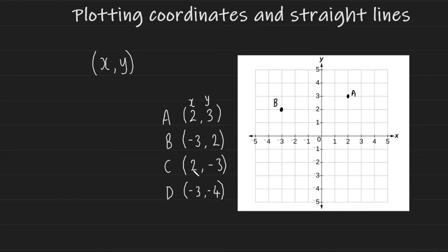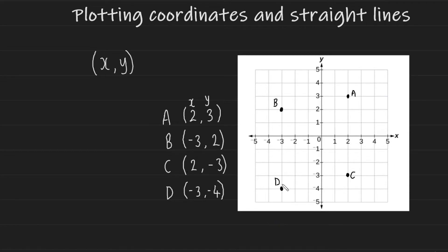Now we're going to go to C. It is two for the x value, so I go two to the right. My y value on coordinate C is negative three, so I go down by three — and this is coordinate C. Now let's try D. This one is minus three in the x direction and minus four in the y direction, so I go to the center, minus three in the x direction and minus four in the y direction, which leads us here. And that's D. And there you have it — that's how you plot coordinates onto an xy axis.